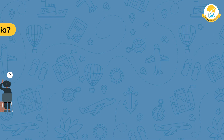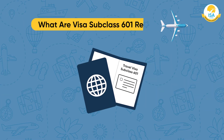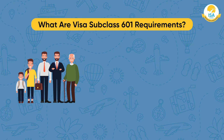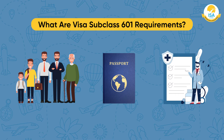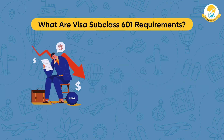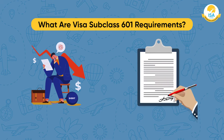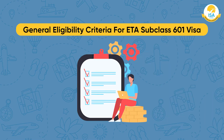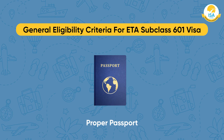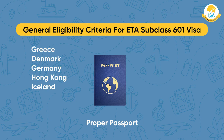What are the Visa Subclass 601 requirements? There is no age bar while applying for this visa. A proper passport of the applicant is required. The applicant should meet health and character requirements, have no debt registered in their name, and sign a document stating they will respect Australian law. The visa 601 requires that you hold a proper passport from an eligible country.